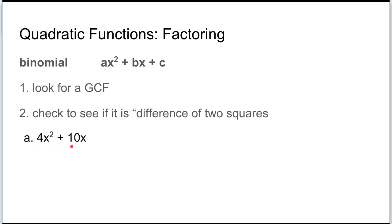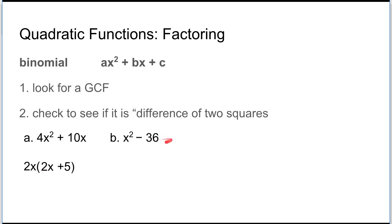Here's the first one: we've got 4x² + 10x. Go ahead and push pause and see if you can factor that on your own. Hopefully you found the greatest common factor was 2x — then you divide 4x² by 2x to get another 2x, and divide 10x by 2x to get 5, giving you 2x(2x + 5). Double-check it by multiplying it back.